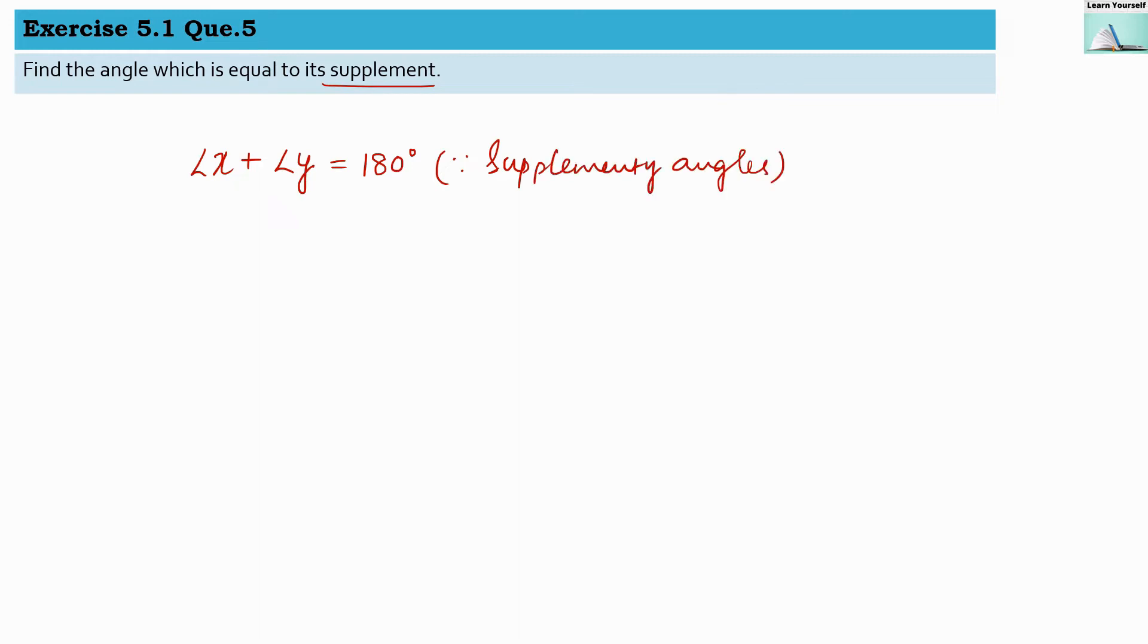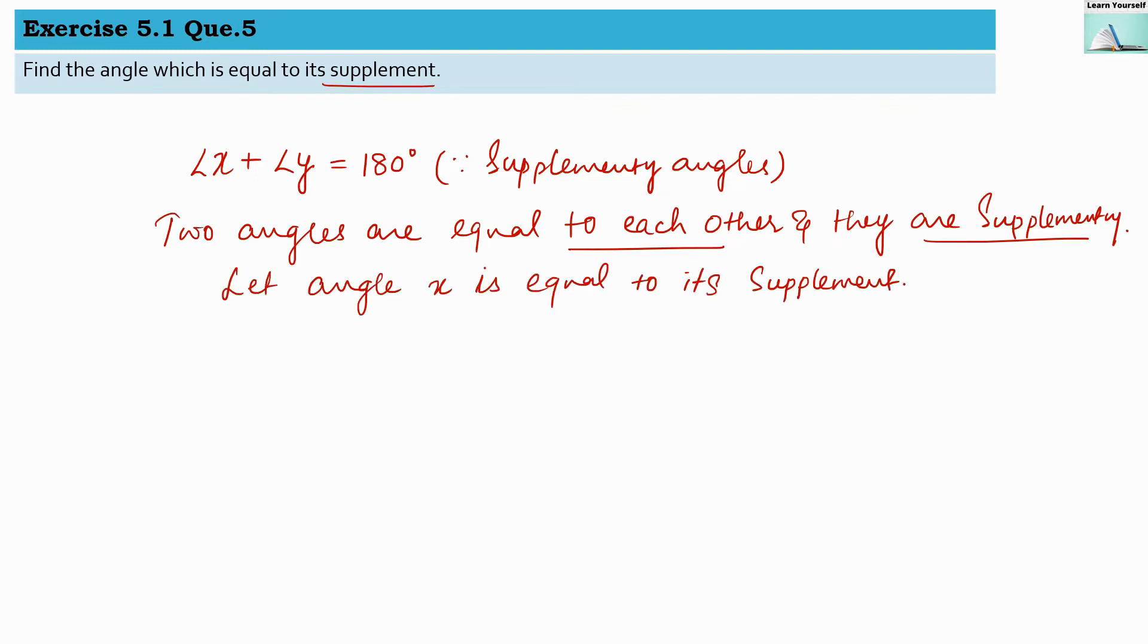An angle which is equal to its supplement means two angles are equal to each other and they are supplementary. Let us assume our angle. Let angle x be equal to its supplement.